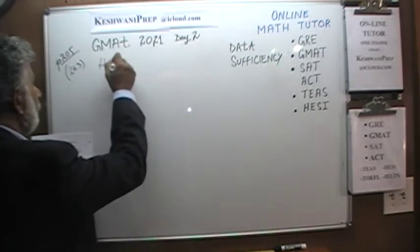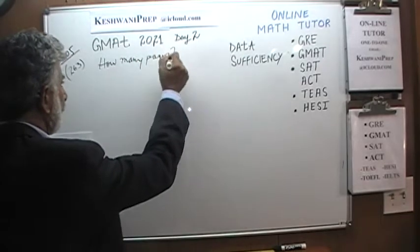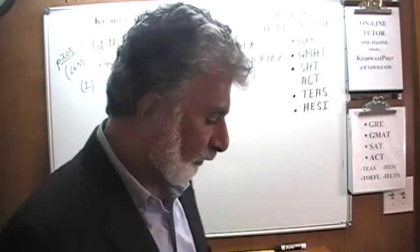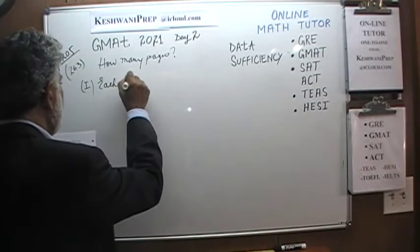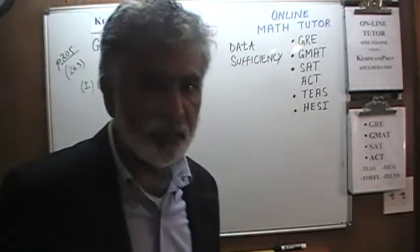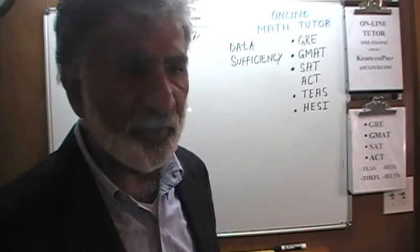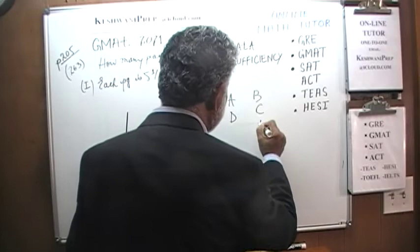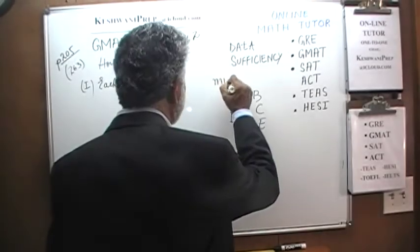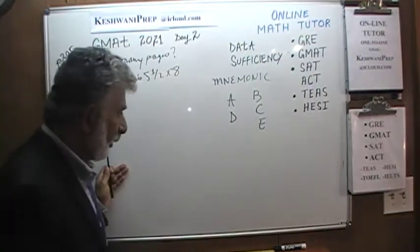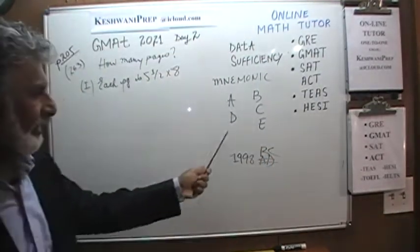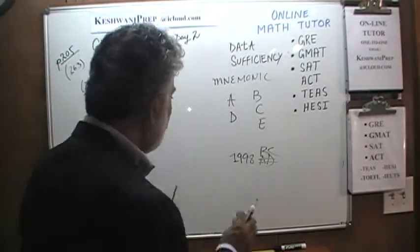The question simply is: how many pages? We have a manuscript and we are being asked how many pages this manuscript has. We are given information in the first statement that each page is five and a half by eight. Now before you start these problems, always make a habit of writing down AD BCE. I will explain that in a second. The mnemonic I use is: when we write the year, for example 1998, is it 1998 AD or is it 1998 BC? AD BCE — that's the memory trick.